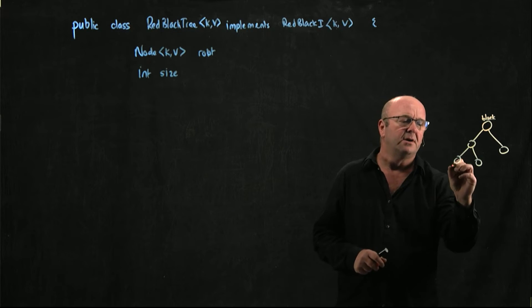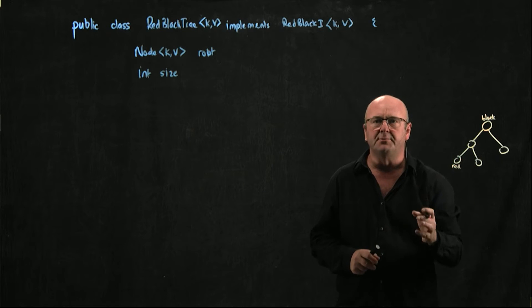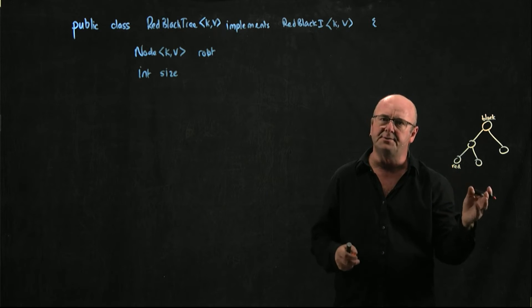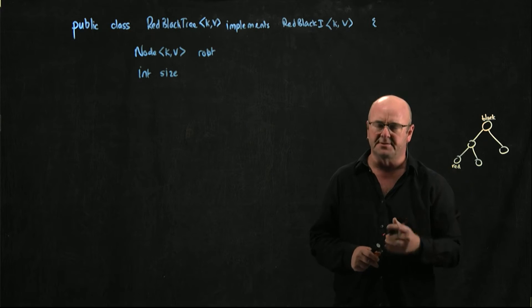We're going to have a simple Boolean, which we're going to call is black. If it's true, it's black. If it's false, the node's red.